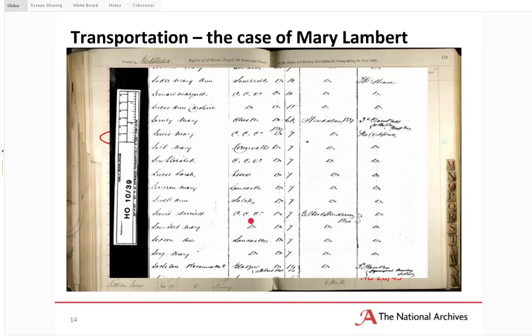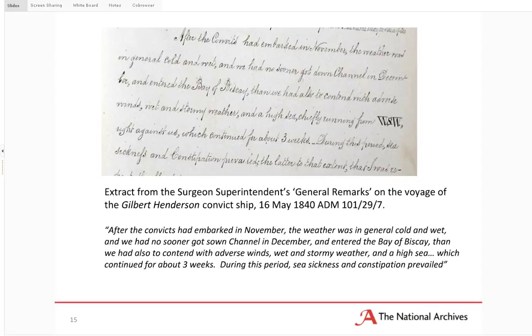You can use these details to find out what life was like for convicts on their journey to Australia or afterwards — which, it's fair to say, was usually quite unpleasant. There is an extract from the Journal of the Surgeon on the Gilbert Henderson convict ship from 16th May 1840. These are in the record series ADM 101, consisting of medical journals from ships — a really interesting and well-catalogued series. The journal records how harrowing and unpleasant the journey was: the terrible weather they suffered, and the continued prevalence of seasickness and constipation for a very long time.